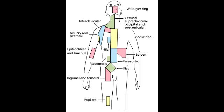What is the primary lymph node drainage site for the lower portion of the rectum and the anal canal above the pectinate line? The lower portion of the rectum and the anal canal above the pectinate line drain into the internal iliac lymph nodes.